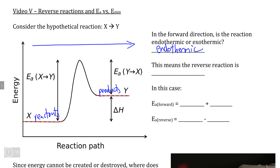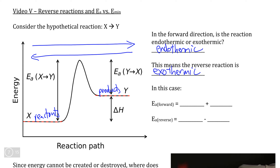Now, if we look at this reaction going backward — if the products of the forward reaction become the reactants and we go backward — suddenly our reactants have a greater potential energy than our products do, meaning that delta H has become negative. So the reverse reaction is going to be exothermic.